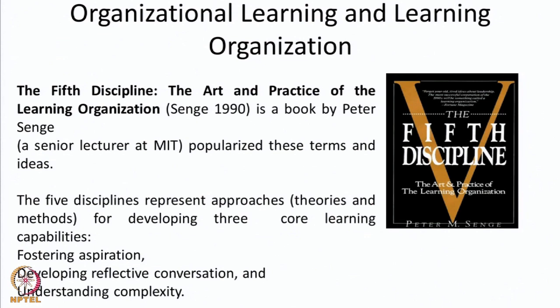The discourse on organizational learning and learning organizations was popularized by the very famous book 'The Fifth Discipline,' written by Professor Peter Senge, a senior lecturer at MIT. He argues that there are five disciplines — practices, theories, or methods — which organizations have to follow in order to develop core learning capabilities. Peter Senge identifies three core learning capabilities: fostering aspirations, developing reflective conversations, and understanding complexity.